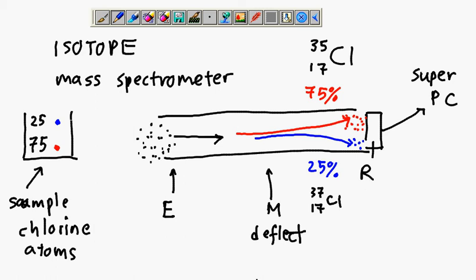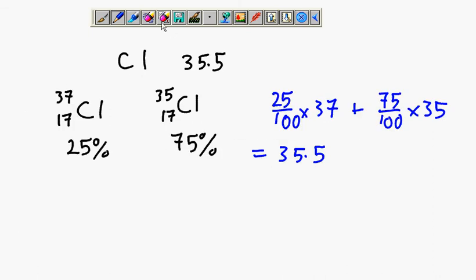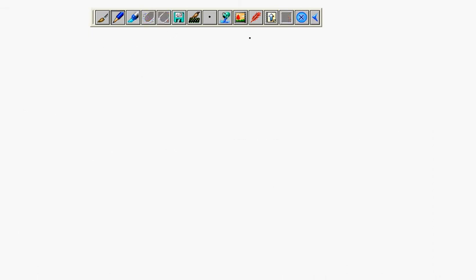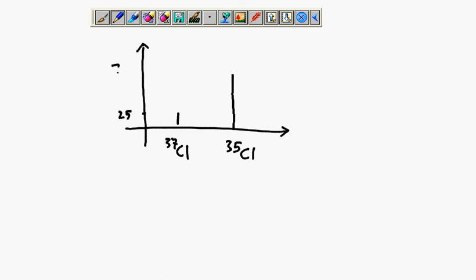The computer screen will show a composition, a graph. The graph would have something like this: 25% and 75%. This one is chlorine 35 and this one is chlorine 37. This is what was discovered.